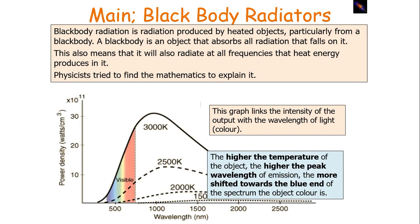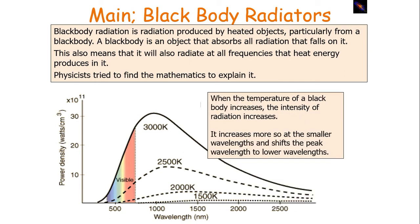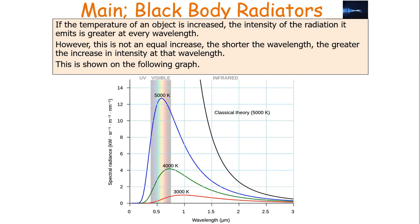The following graph shows how close the sun's output is to a black body radiator, with grey being the idealised black body radiation curve from the mathematics and orange being the actual observed output from the sun. The peak wavelength of radiation is linked to the temperature of the black body radiator. The higher the temperature of the object, the shorter the peak wavelength of emission — more shifted towards the blue end of the spectrum. When the temperature of a black body increases, the intensity of radiation increases at all wavelengths, but it increases more so at smaller wavelengths, shifting the peak wavelength to lower values. The increase in intensity is not equal — the shorter the wavelength, the greater the increase in intensity at that wavelength.